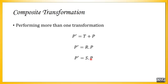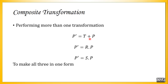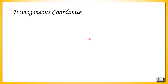Animation requires performing more than one transformation, so we want to make all three transformations use the same formula. We want to convert this addition into a multiplication. To do that, we are going to introduce a new term called a homogeneous coordinate.